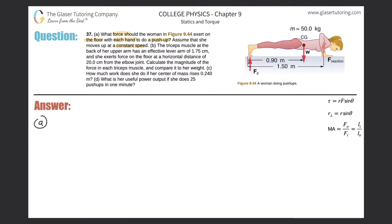Drawing the picture: here is the axis of rotation, her weight pointing down. Her weight equals mass times gravity: 50 kilograms times 9.8. The distance between the axis of rotation and her weight vector, as given in the picture, is 0.90 meters. The reaction force points up where her arms are, and that distance from the axis of rotation is 1.5 meters.